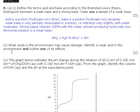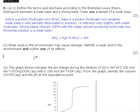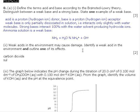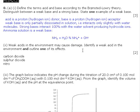Weak acids in the environment may cause damage. Identify a weak acid in the environment and outline one of its effects. Carbon dioxide is a weak acid. Another possible choice is sulfur dioxide. Sulfur dioxide exists due to pollution, as does nitrogen dioxide. All of these are weakly acidic gases.